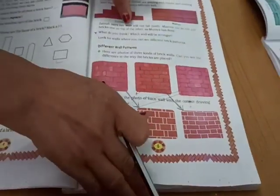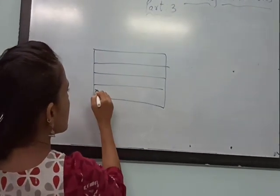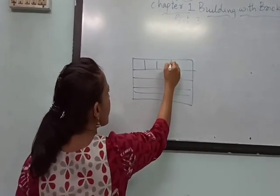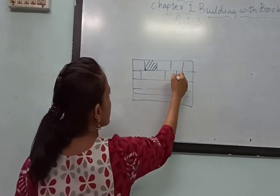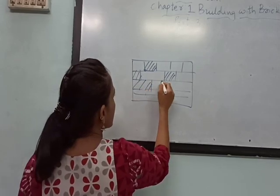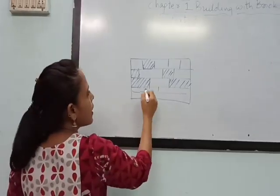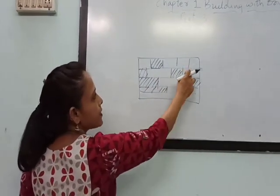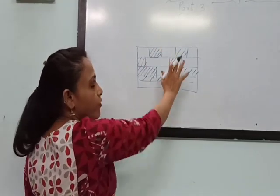Let's move on to page number 6 — next topic is looking through a brick jali. For example, this is a wall. Wherever the shadow is shown, that part is brick, and where there is no shading, that is empty space. This empty space between the bricks forms the jali pattern.